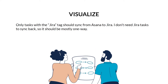Next, visualize. Think about the flow of work from end to end and how and when things should sync. For example, only certain tasks from Asana need to go into Jira — just the ones with the Jira tag. Jira tasks don't need to sync back to Asana, so it should be mostly one way.